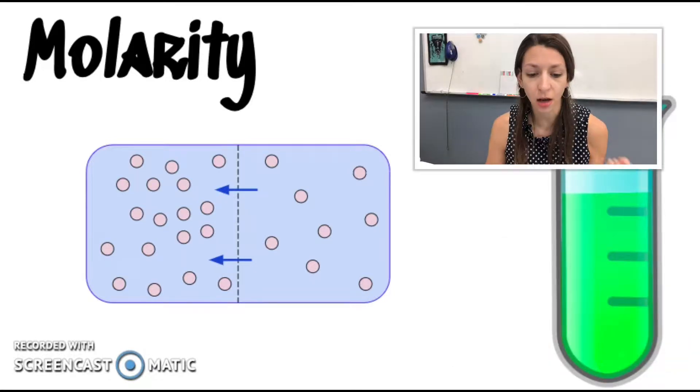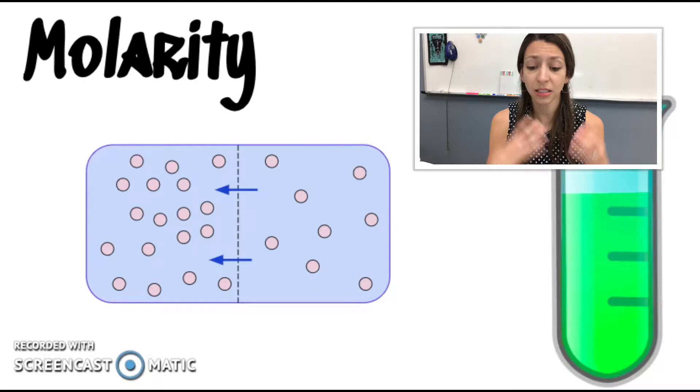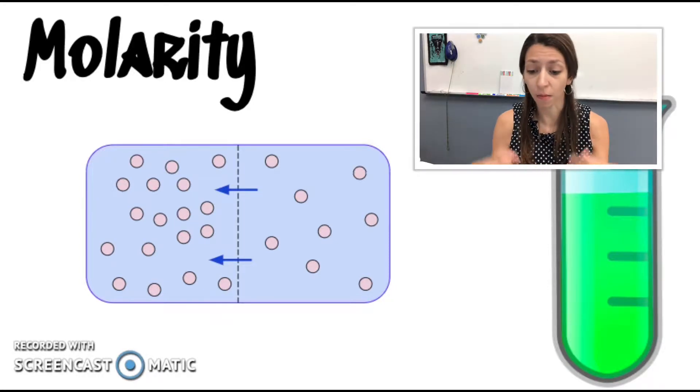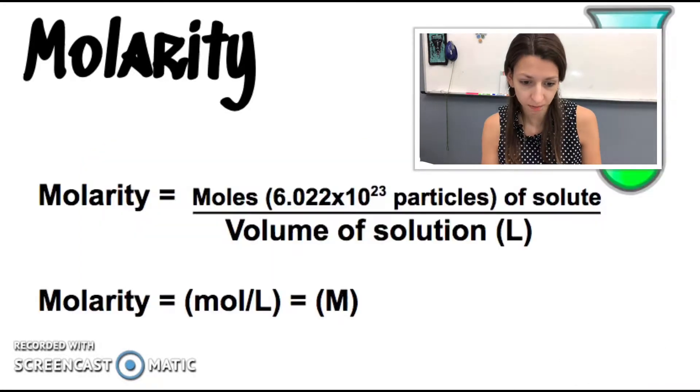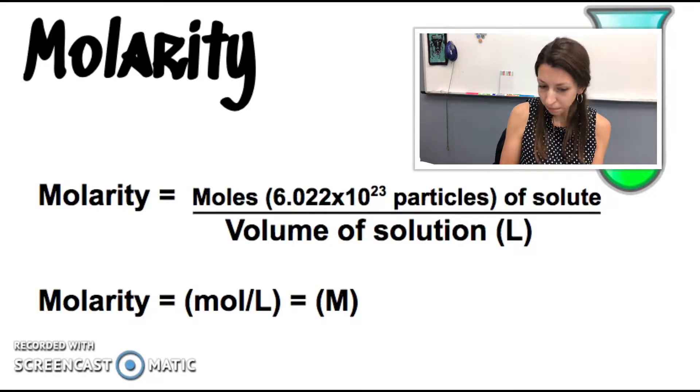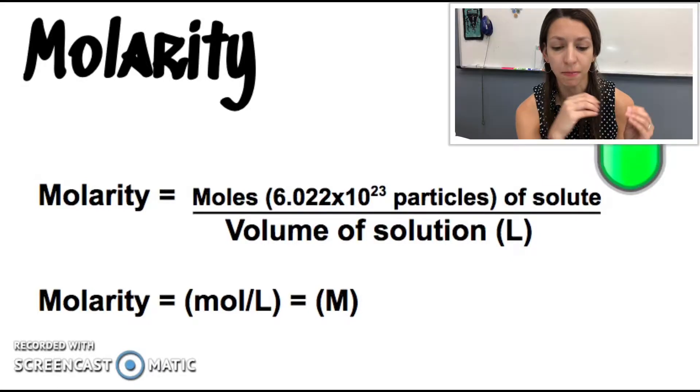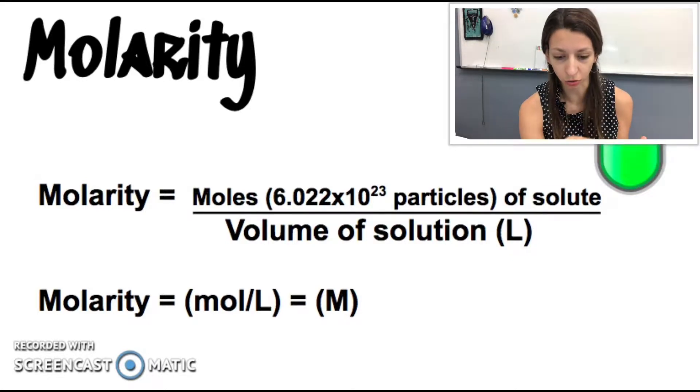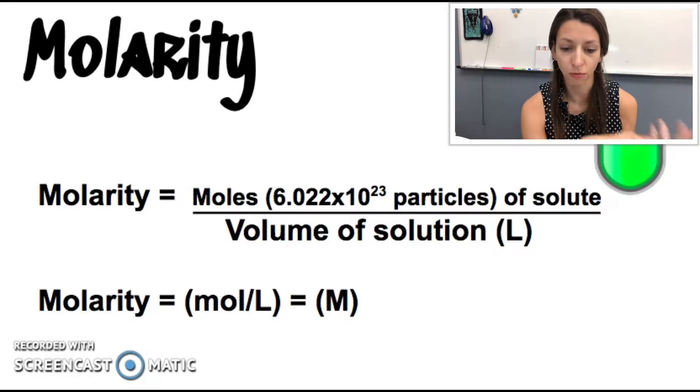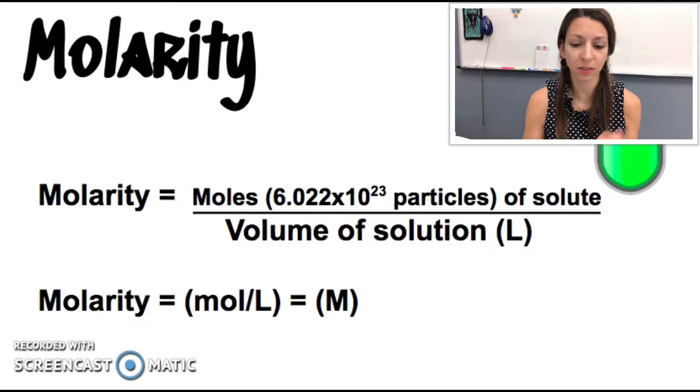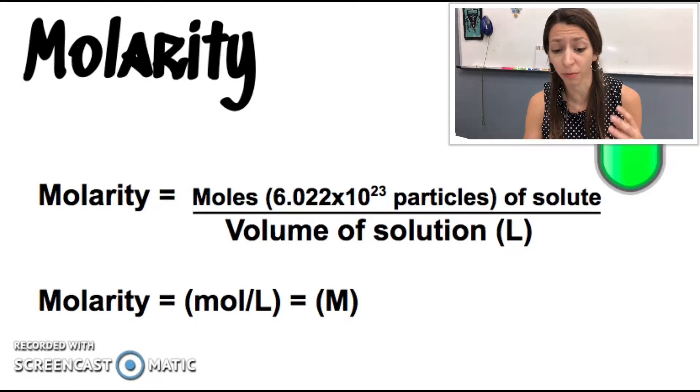Now scientists need to measure the number of particles of a substance in a solution. So molarity is the amount of that substance or moles in a liter of water. So let's talk about molarity. Molarity is expressed in big M, moles of solute per liters of solution. So moles per liter. And remember, our mole is 6.02 times 10 to the 23rd number of particles.